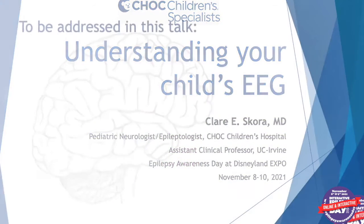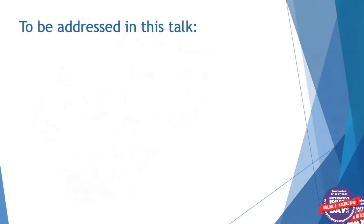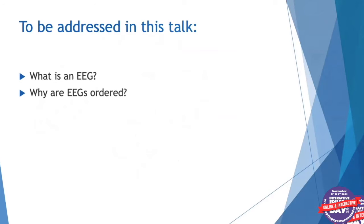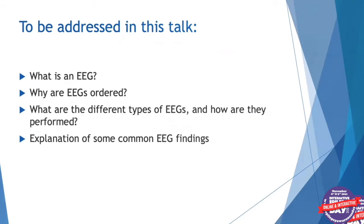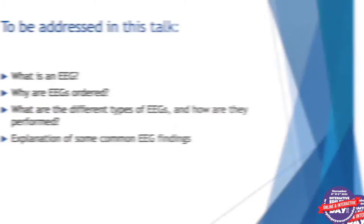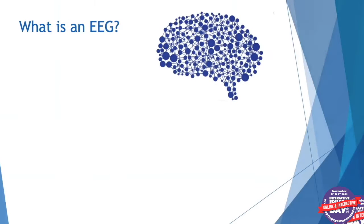These will be the points I'll address in this talk: first, the definition of what an EEG is; why EEGs are sometimes ordered; what are the different types of EEGs and how they're performed; and finally an explanation of some common EEG findings.